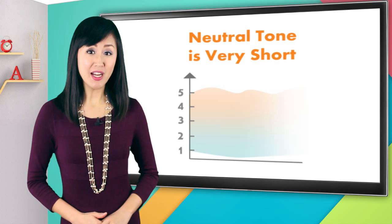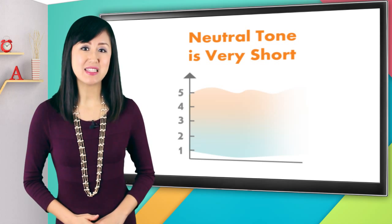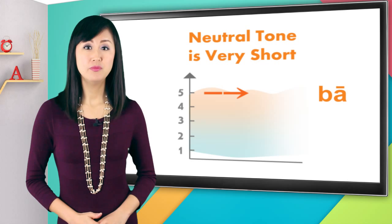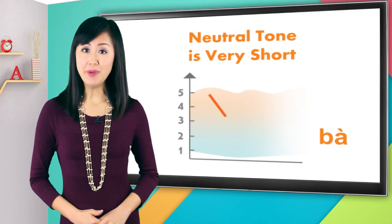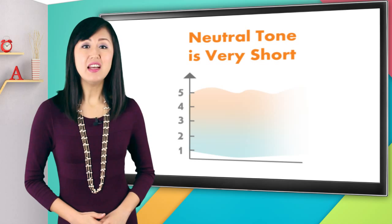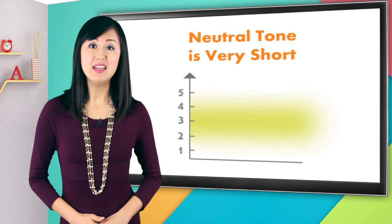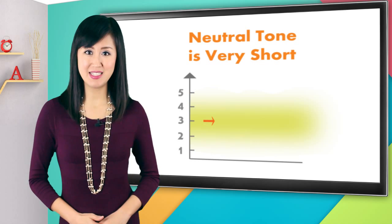If other syllables that carry a tone are, say, two beats, like 'ba' with the first tone or 'ba' with the fourth tone, then a syllable with a neutral tone is just one beat or less: 'ba'.